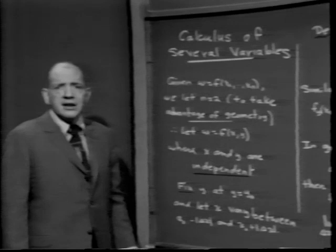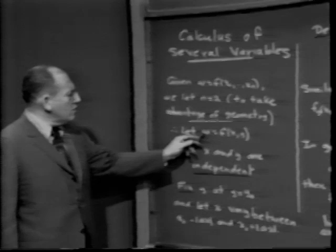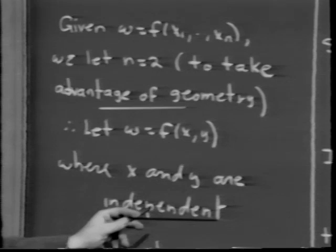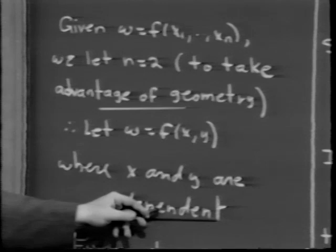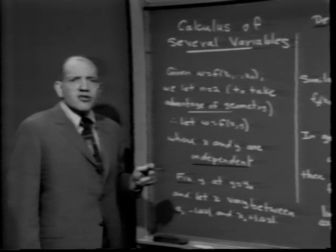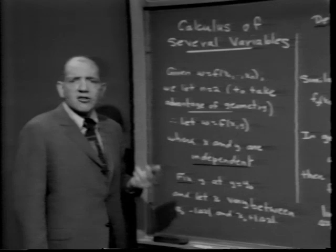The danger with n equals 2 is you get so used to the picture that you forget n could have been more than 2. So I will try to pay homage to both points of view. When we let n equal 2, the usual notation is w equals f of xy, where x and y are independent. To say that x and y are independent simply means you can choose one variable without determining the other — for example, if y equals 2x, then x determines y and they are not independent.